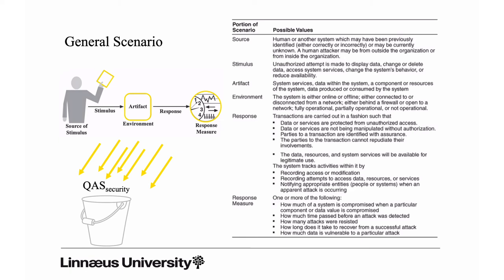You can select human as a source, you can select access system services where the environment is fully operational. Then data or services are protected from unauthorized access. If we have an unauthorized human that attempts to access a system service and the environment the system is running in normal operation mode, then the response should be that the data or services are protected.